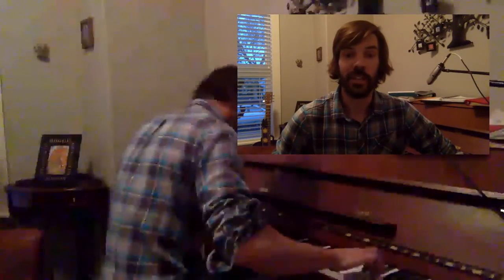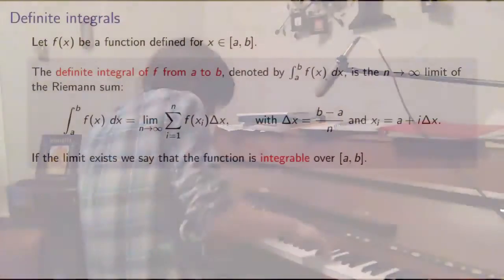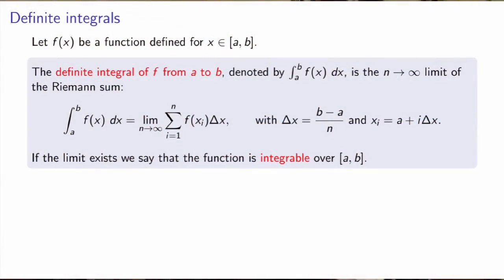Today we're going to study definite integrals, which I define as limits of Riemann sums and their properties. Let me start by defining definite integrals. Let f be a function over some interval a to b. Then the definite integral of f from a to b, denoted by this symbol, is the limit as n goes to infinity of the Riemann sum introduced in the previous video.